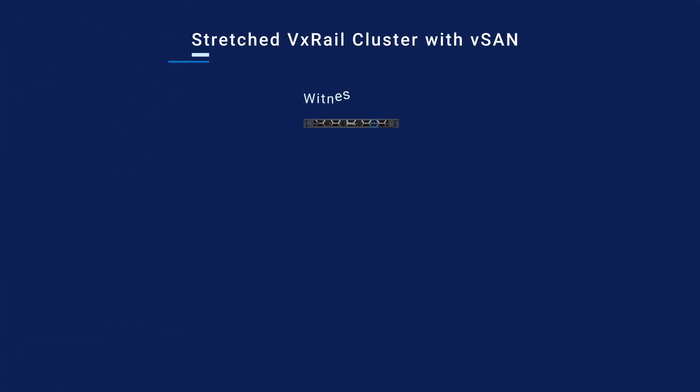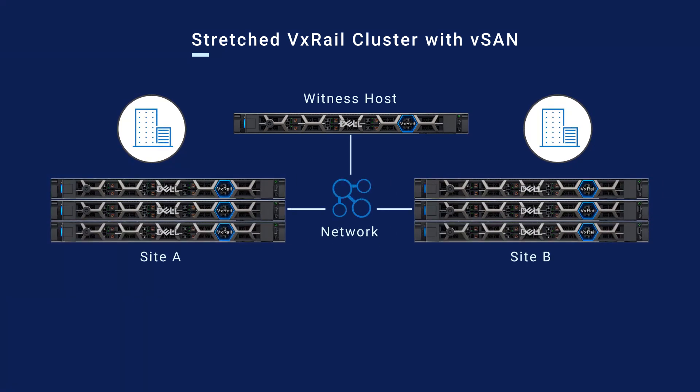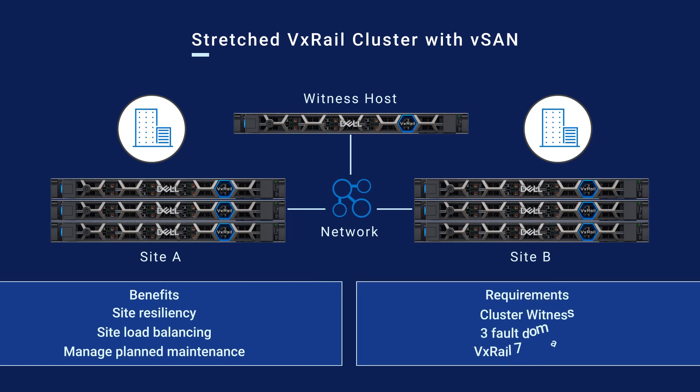Whether you opt for the traditional vSAN OSA or the new high-performance vSAN ESA, stretching your VxRail cluster across sites creates site resiliency for your application workloads. If something like a power outage or a fire occurs, workloads can fail over from one site to another. A stretched cluster requires a cluster witness running at a third site, which can be a physical host or a virtual machine. Stretching a cluster allows you to balance workloads across sites and more easily manage maintenance cycles. Although the witness can tolerate up to 200 milliseconds, a critical guideline is to keep latency between the sites below 5 milliseconds.